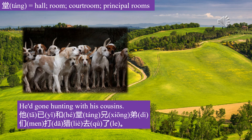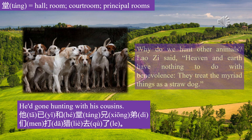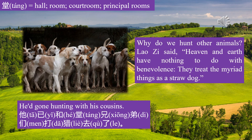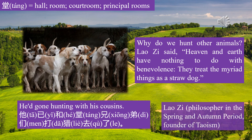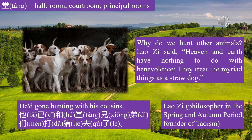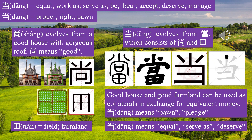他已和堂兄弟们打猎去了 — He had gone hunting with his cousins. 老子, a philosopher in ancient China, said: Heaven and earth have nothing to do with benevolence; they treat the myriad things as a straw dog.